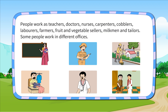People work as teachers, doctors, nurses, carpenters, cobblers, laborers, farmers, fruit and vegetable sellers, milkmen and tailors. Some people work in different offices.